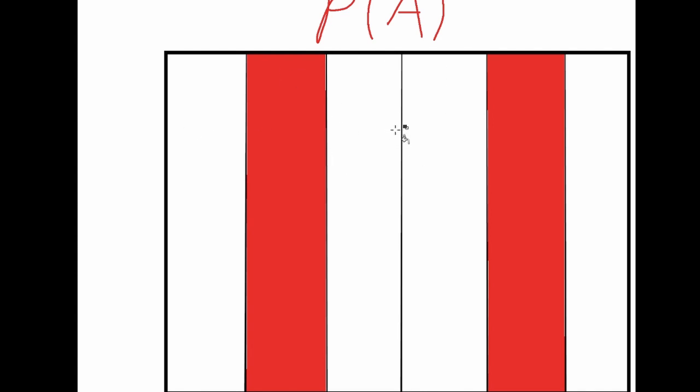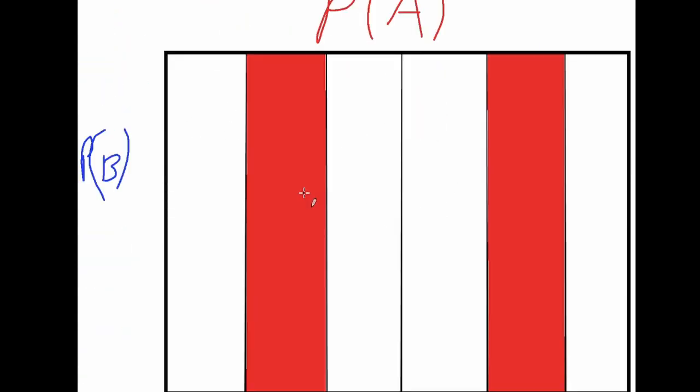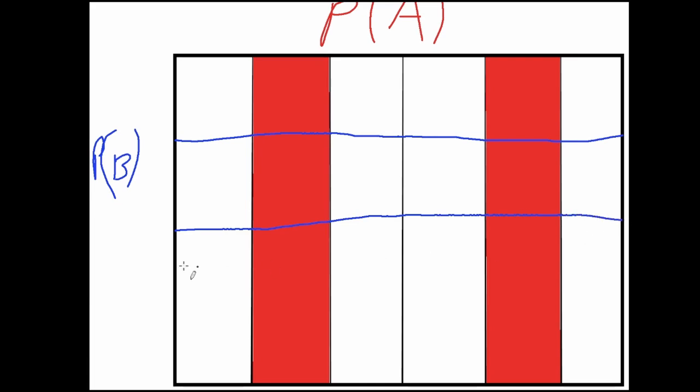Now similarly we could showcase the event B happening by subdividing our whole solution space into areas of four and highlighting three of those areas. So for instance, just splitting this up into four separate areas, and that's four.